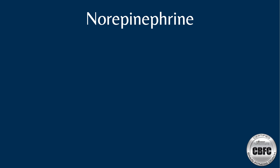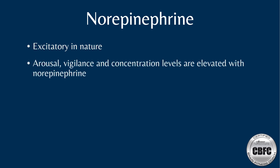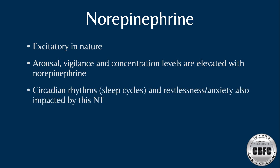Norepinephrine is an excitatory neurotransmitter associated with arousal, vigilance, and concentration. It is elevated during the stress response and can impact circadian rhythms; when elevated, it can result in restlessness and anxiety. Like dopamine, its precursor is the amino acid phenylalanine, converted to tyrosine, which is essential in regulating mood and metabolism. Low levels of norepinephrine can result in ADHD, depression, and obsessive behaviors.